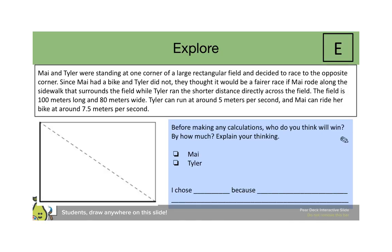For the explorer, students are given the following situation: Mai and Tyler were standing at one corner of a large rectangular field and decided to race to the opposite corner. Since Mai had a bike and Tyler did not, Mai rode along the sidewalk surrounding the field while Tyler ran the shorter distance directly across. The field is 100 meters long and 80 meters wide. Tyler can run at 5 meters per second and Mai can ride her bike at around 7.5 meters per second. Before making any calculations, who do you think will win? By how much?